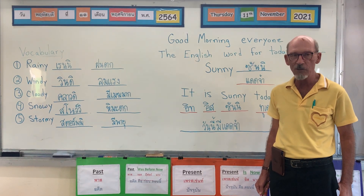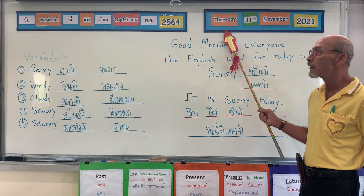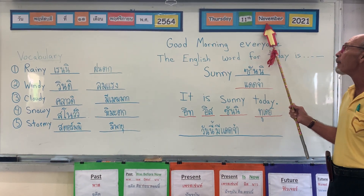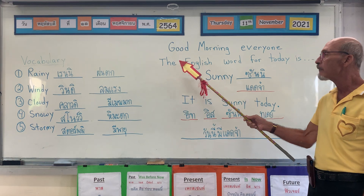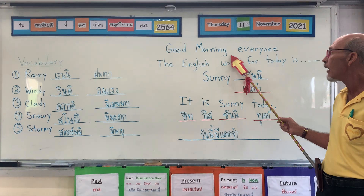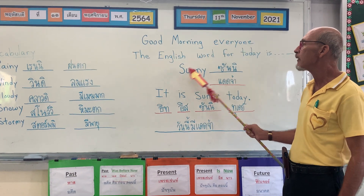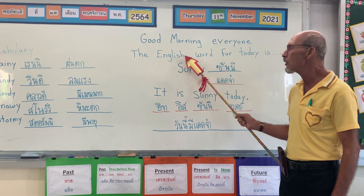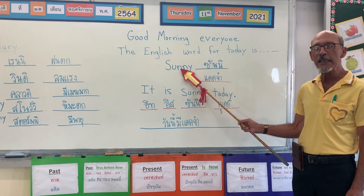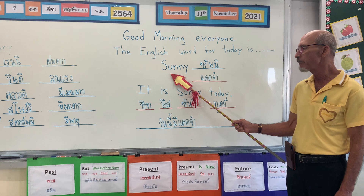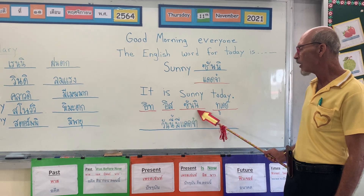Good morning guys, this is our Let's Go lesson for today. The day today is Thursday, the 11th of November 2021. Good morning everyone, remember repeat after me. The English word for today is sunny. The sentence for today: it is sunny today.